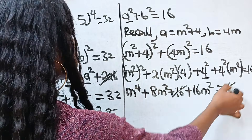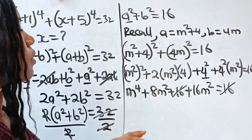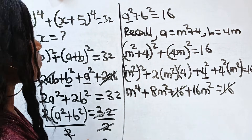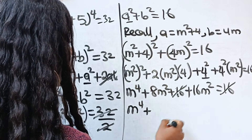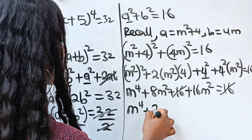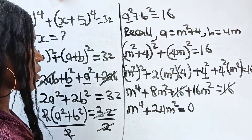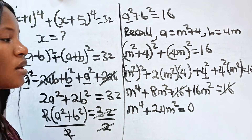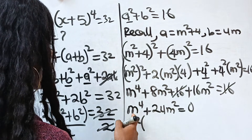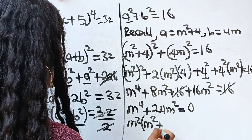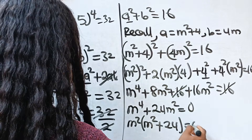Since we have positive 16 on both sides, they cancel out. We are left with m to the power of 4 plus 8m squared plus 16m squared, which is m to the power of 4 plus 24m squared equals 0. We can factorize m squared out, giving m squared times (m squared plus 24) equals 0.